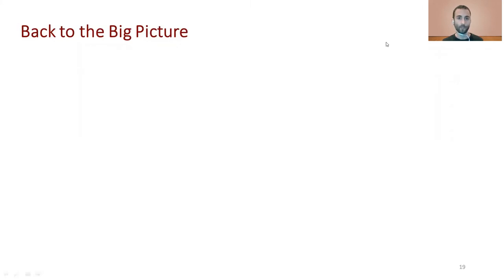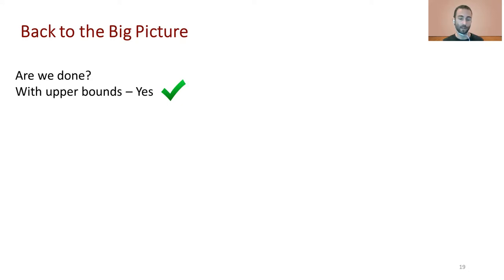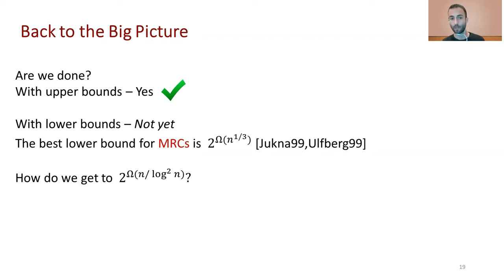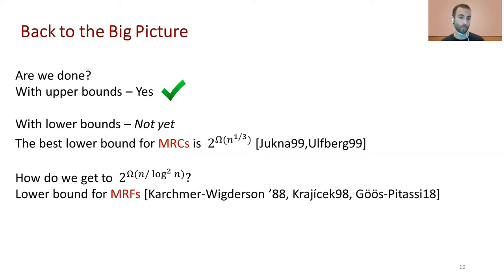Back to the big picture: for upper bounds, we've seen that recent upper bounds for secret sharing also apply to formulas over slices, and by Rosenblum's transformation they also apply to monotone real circuits. But we are not done with lower bounds. The best known lower bound for monotone real circuits is 2^{Ω(n^{1/3})}, by Hrubes and Wolfberg, using a generalization of Razborov's approximation method. We want to reach a much better lower bound of 2^{Ω(n / log² n)}.